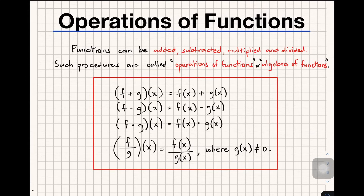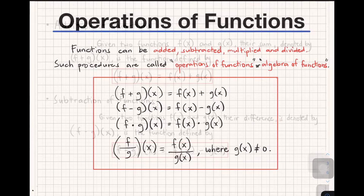We have f plus g of x, that is equal to f of x plus g of x. The second one: f minus g of x is equal to f of x minus g of x. Third, f times g of x is equal to f of x times g of x. And the fourth one: f divided by g of x is equal to f of x over g of x.